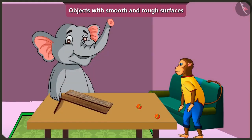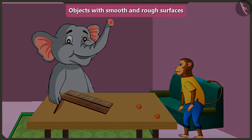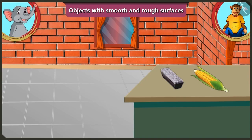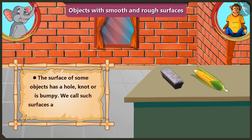Come on, now touch and feel the other slope. Oh, its surface is too rough! Yes, correct — this slope has a rough surface. Appu, when the surface of an object has a hole, knot, or if it is bumpy, we call that a rough surface. Which means our hand cannot slide on it easily.